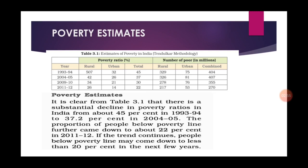Today we start with poverty estimates. Poverty, or the state of being poor, may be defined as a situation where a section of society is unable to secure minimum consumption requirements of life, health and efficiency. These requirements include minimum human needs in respect of food, clothing, housing, education and health. Poverty is thus defined as a lack of income to acquire minimum necessities of life. Though poverty in India is found in both urban and rural sectors, it is more serious in the rural sector.